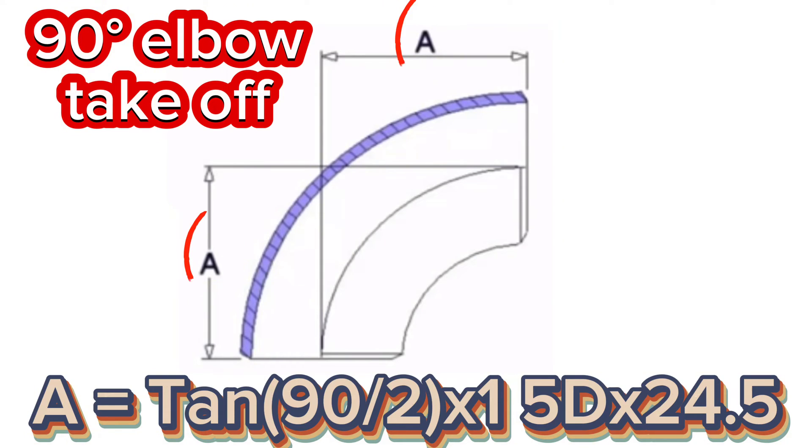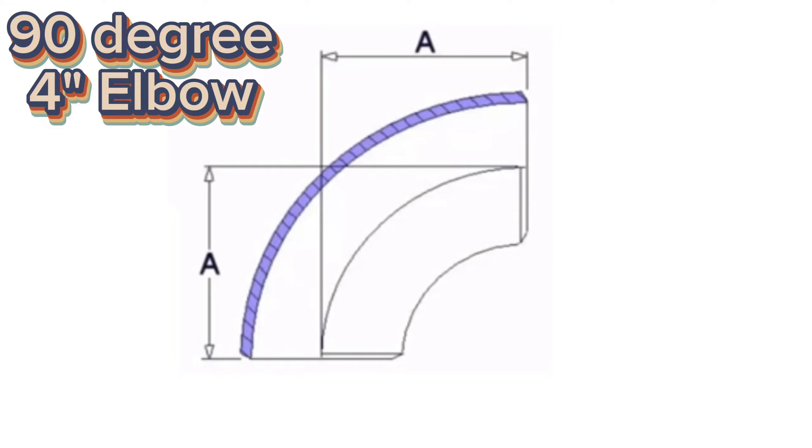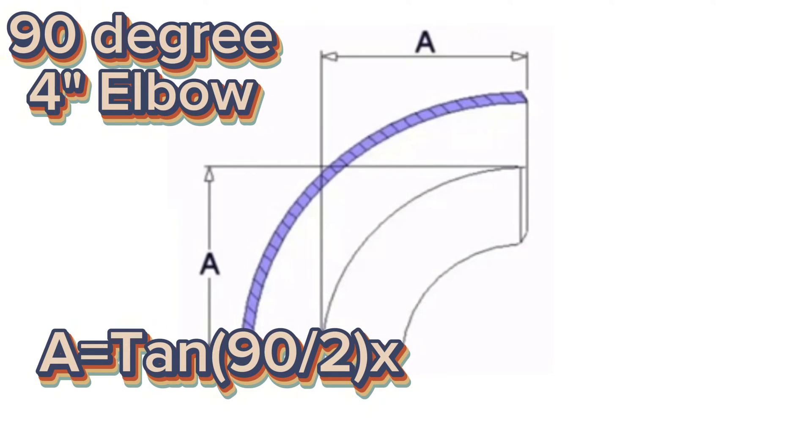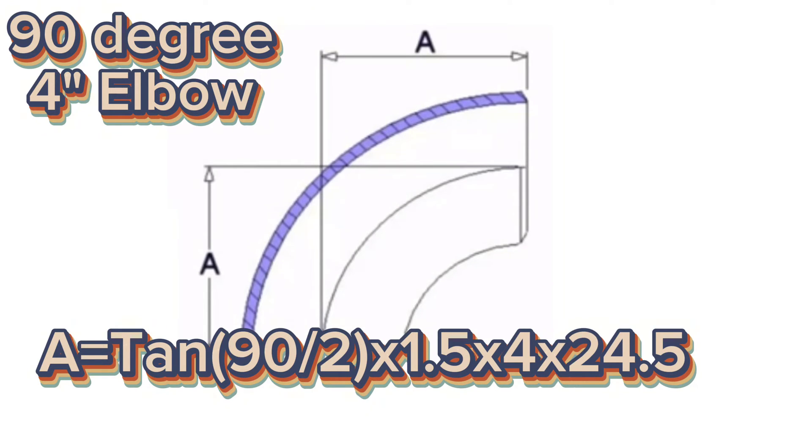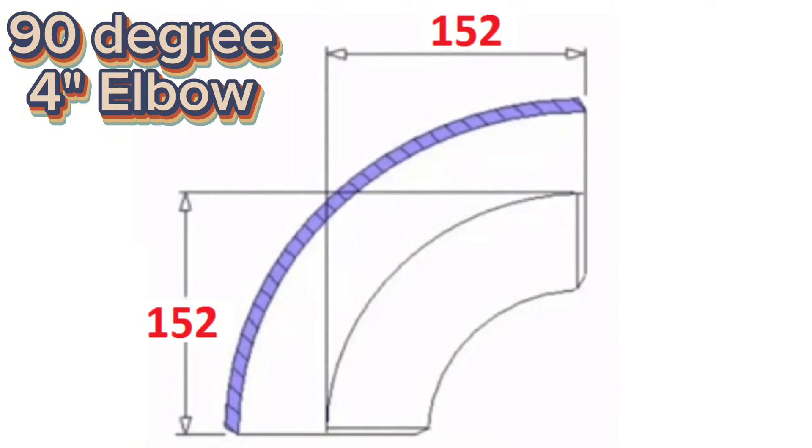We will calculate center of 90 degree 4 inch elbow with help of scientific calculator. A equals tangent 90 divided 2 multiply 1.5 multiply 4 inches multiply 25.4 millimeters. A equals 152 millimeters. We calculated and found that 4 inch 90 degree elbow center to end dimension is 152 millimeters.